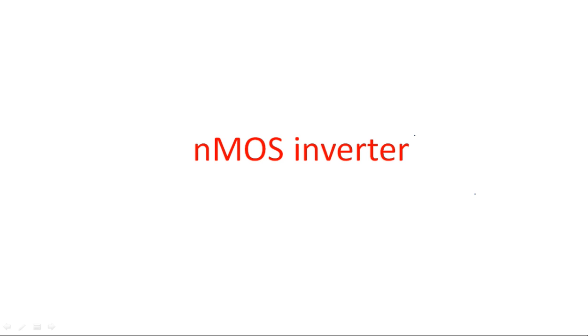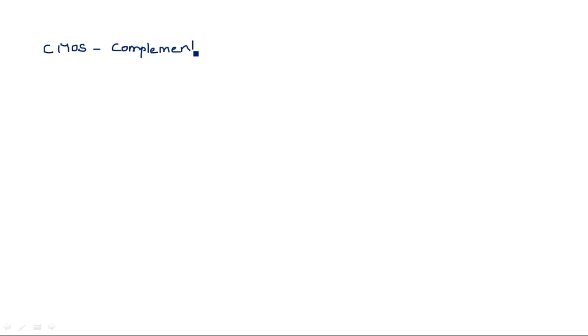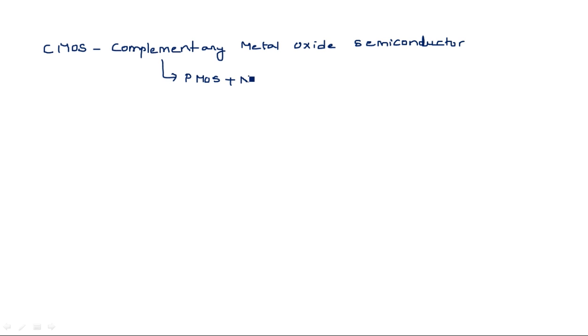In this video I am going to explain about the NMOS inverter. We know the inverter which is a CMOS type. CMOS is nothing but Complementary Metal Oxide Semiconductor. It has a push-pull configuration and it consists of both PMOS as well as NMOS transistors.